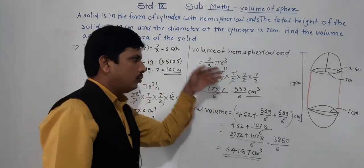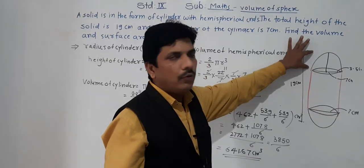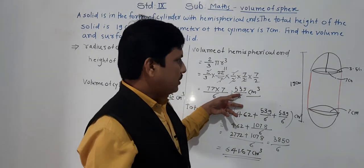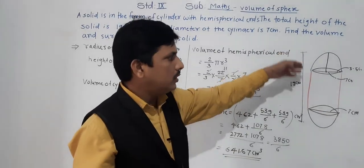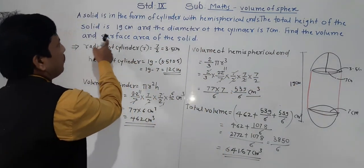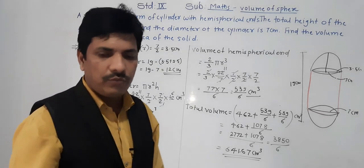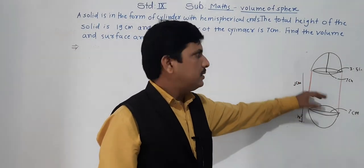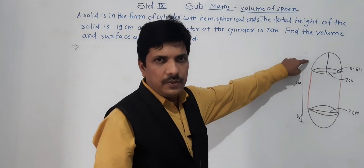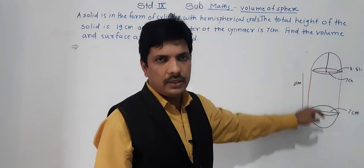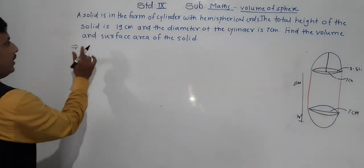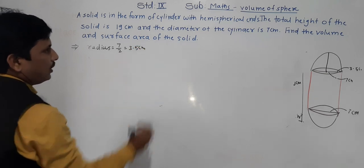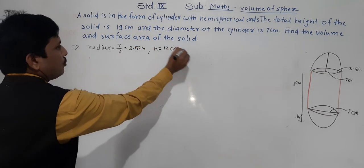So volume is done — volume of cylindrical part plus volume of both hemispherical ends gives the total. Now the second part: find the surface area of the solid. Surface area = CSA of cylinder + CSA of both hemispherical ends. Radius = 3.5 cm, height = 12 cm.